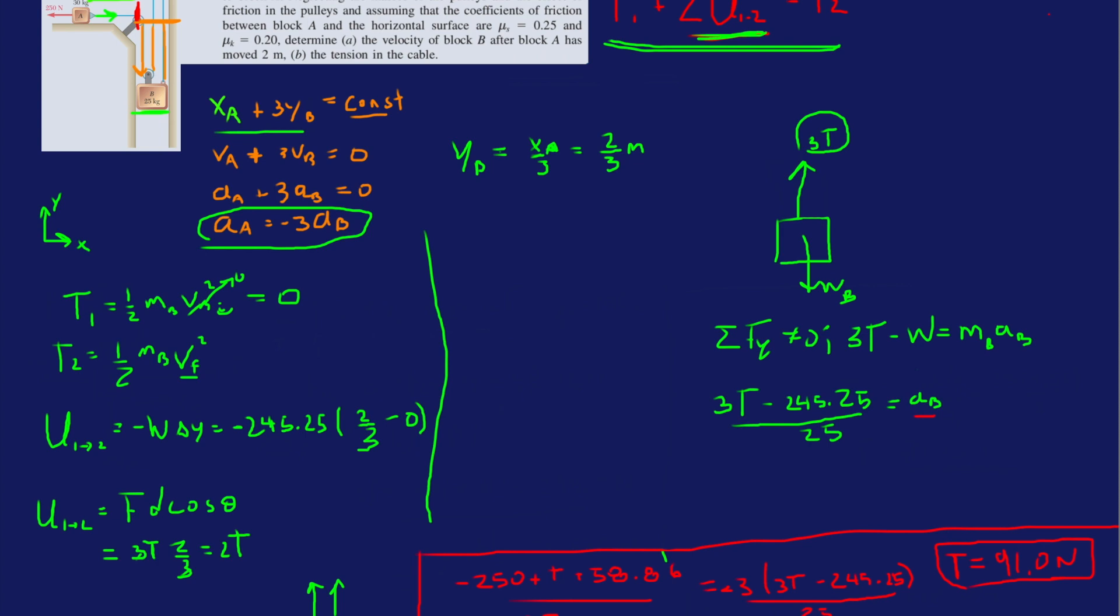Let's do this right in the middle, and let's change colors to yellow. So T1 is zero plus sum up all the U12s. So we have minus 245.25 times 2/3 plus minus 163.5 plus 2T, which is 2 times 91. And that's equal to T2, one-half 25 VF squared.